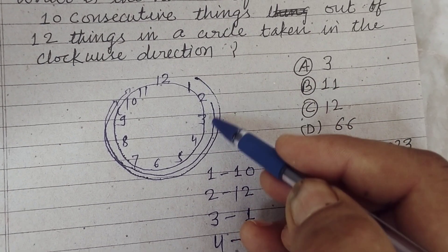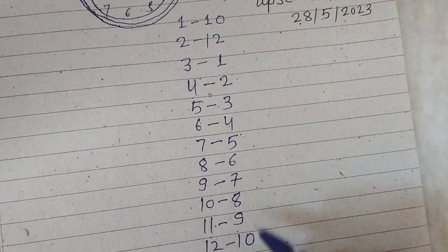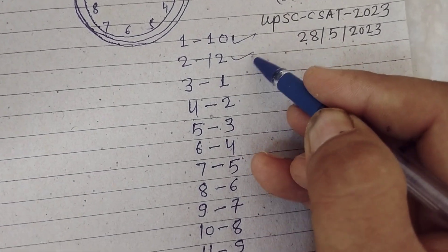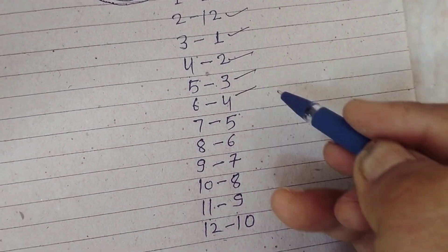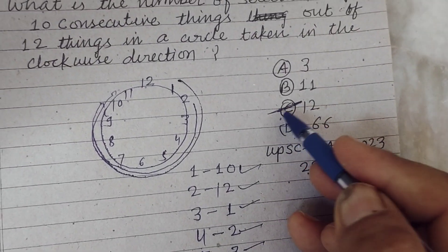So these are 1, 2, 3, 4, 5, 6, 7, 8, 9, 10, 11, 12. So 12 is the number of selections of the things which is given in the question.